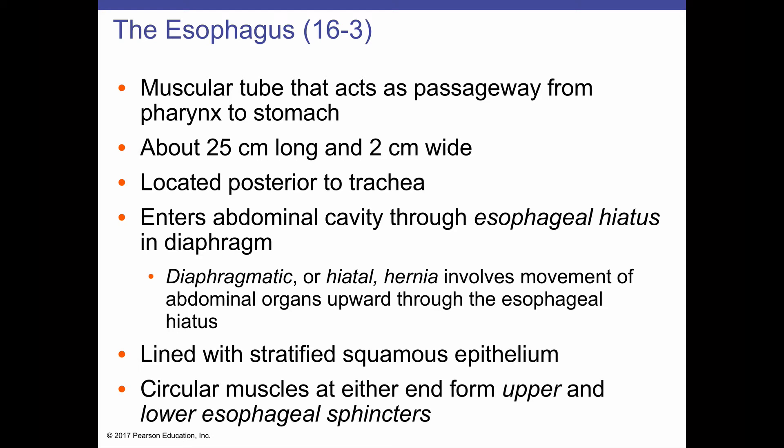Hiatal hernias happen somewhat commonly but are not usually problematic unless they displace or put pressure on thoracic organs, in which case they often need to be addressed. The epithelium of the esophagus is lined with stratified squamous epithelium, because it must deal with the abrasion of a bolus passing along this narrow tube. The esophagus is surrounded by smooth muscle like the rest of the digestive system, but the upper third of the esophagus has skeletal muscle, which blends with smooth muscle in the middle third.